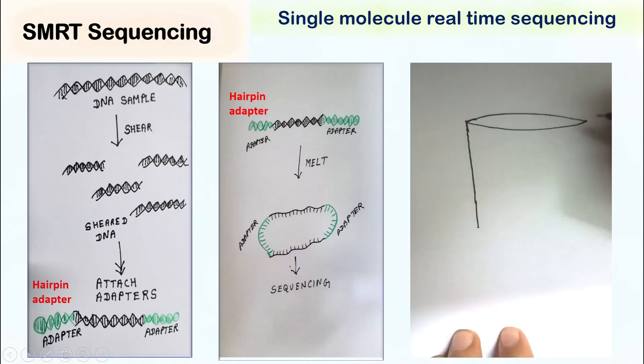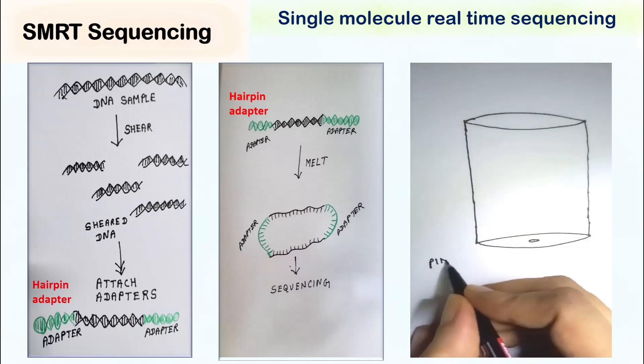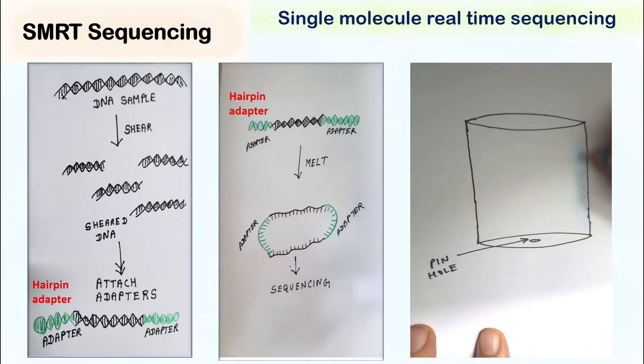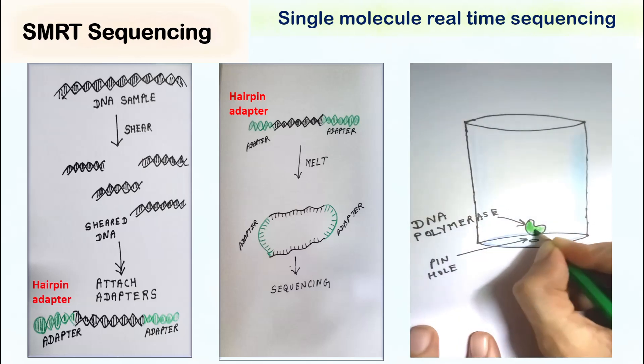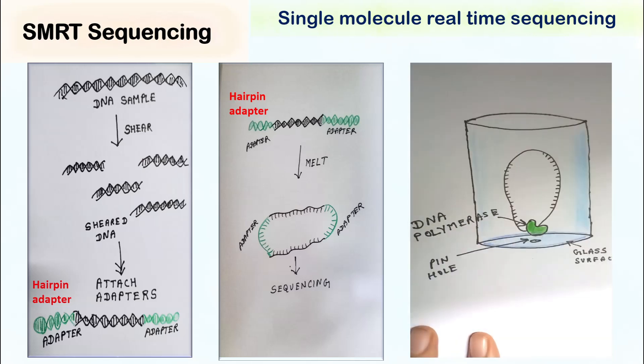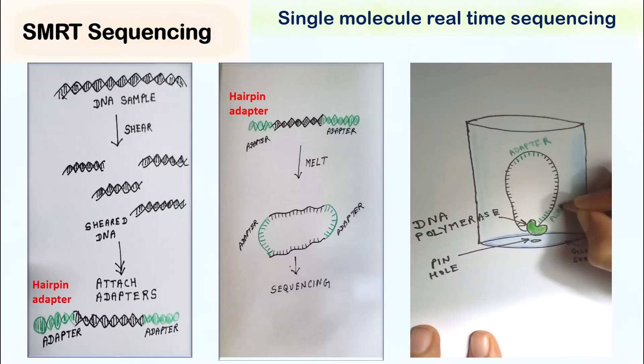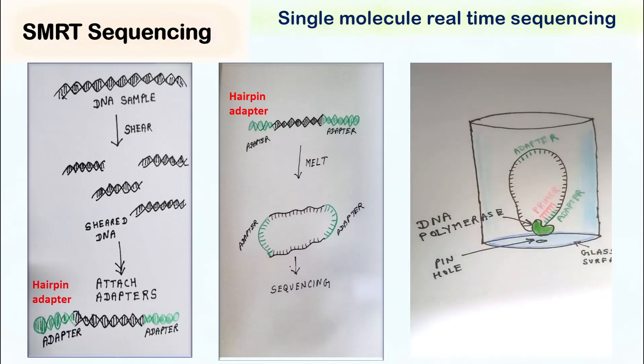So, this is the setup we have: a well having opaque surface with pinhole and the surface of glass just near the pinhole where we have DNA polymerase. Since the adapter sequence is already known, we can design the primer against the adapter.